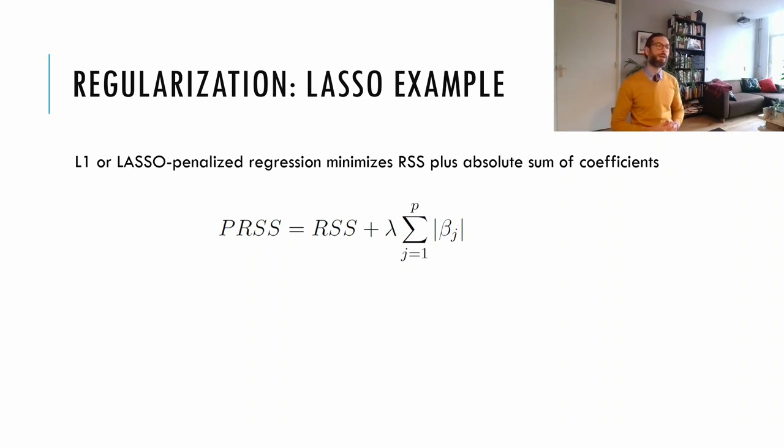The most well-known regularization technique is lasso regression. And instead of minimizing the residual sum of squares, lasso regression minimizes the residual sum of squares plus the absolute sum of all regression coefficients. Now, this incentivizes the regression coefficients to be as small as possible. And the result is that the effect of some irrelevant moderators is shrunk towards zero. So variable selection is performed here by shrinking some regression coefficients towards zero.